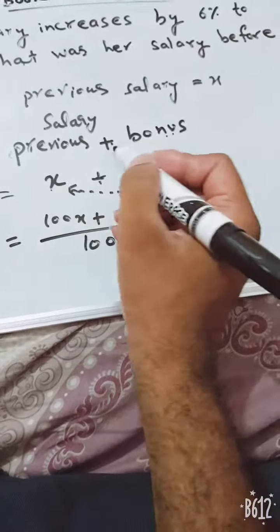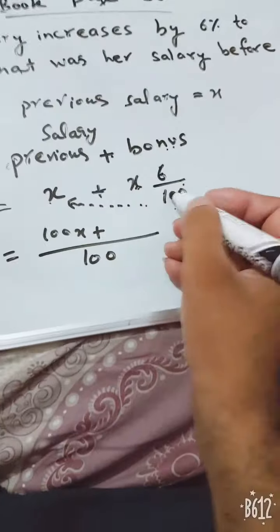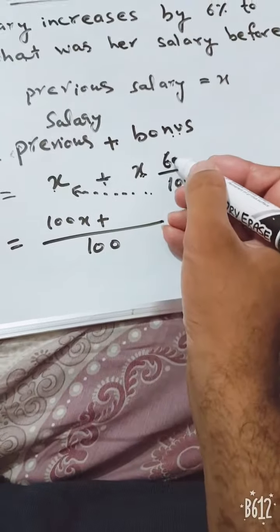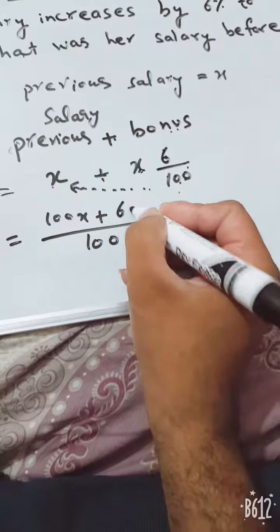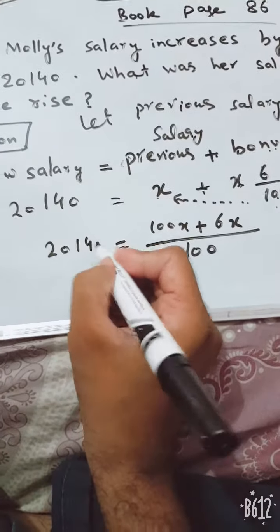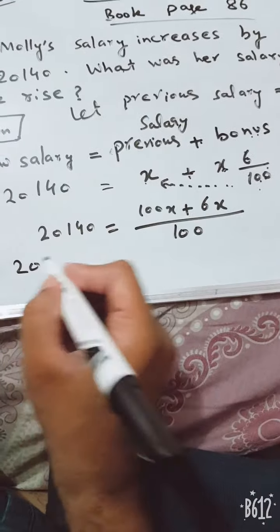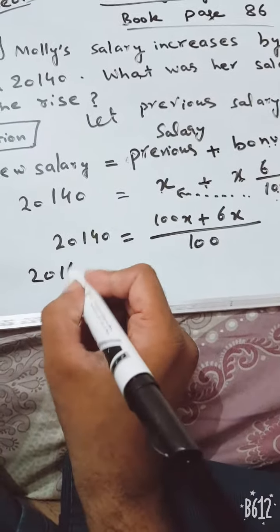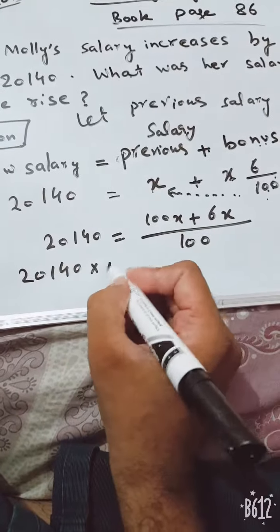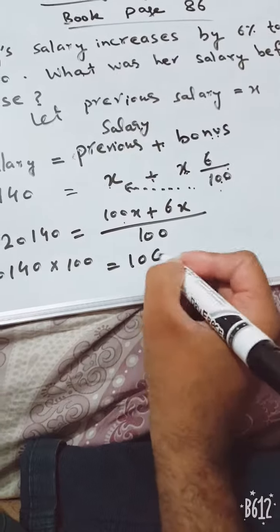And here is the matter of bonus or promotion. Discount is subtracted. Bonus or promotion is added. And when 100 is already here, 6x will come as it is. £20,140 will be placed as it is. 100 will go to the other side and will be multiplied with £20,140. It will become 106x.